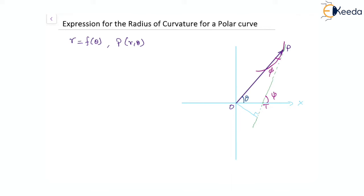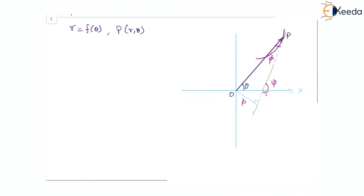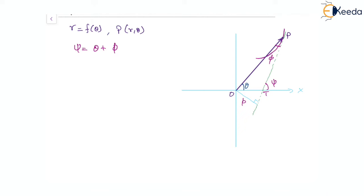Here p is the perpendicular distance of the tangent from the pole. With all this information, we know that psi equals theta plus phi, as this is the exterior angle to the triangle OPT. This is something which we have already learnt.